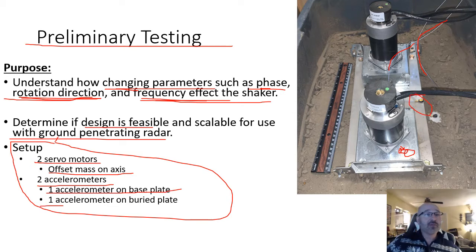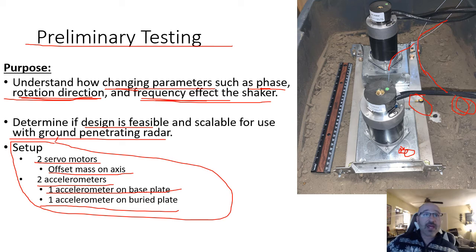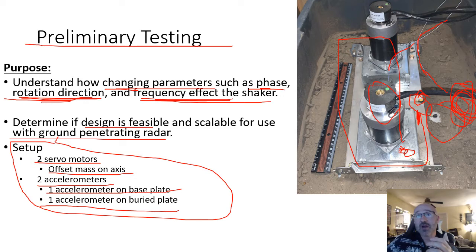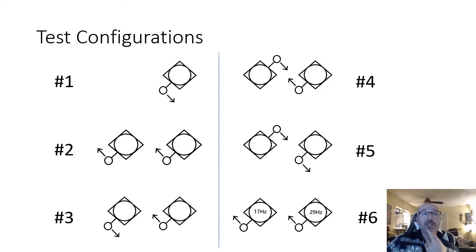Our setup consisted of the two servo motors and offset masses, plus two accelerometers. Where we put the accelerometers is important — you can see the two gray wires going down connected to the accelerometers. One accelerometer is on the base plate itself, and the other is on the buried plate or simulated landmine. The cord goes down into the ground to the actual landmine where we have the second accelerometer, so we can see two different frequencies.